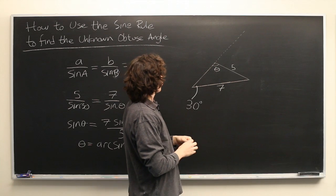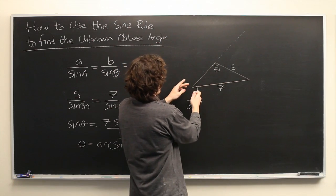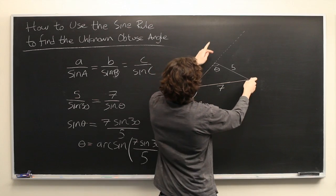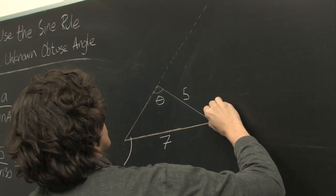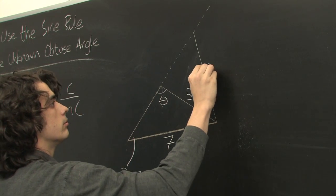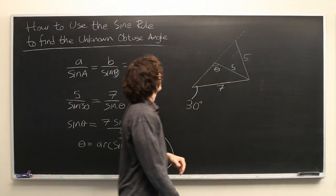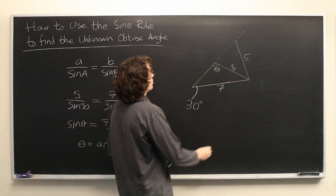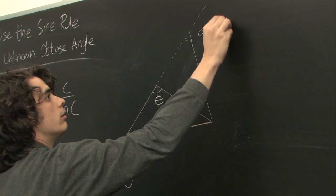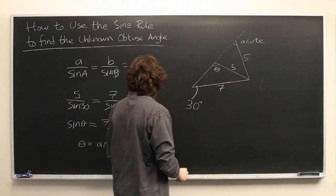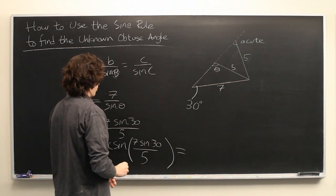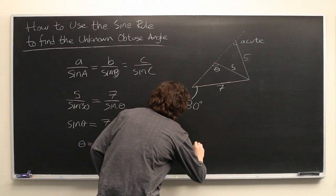There are actually two triangles that will make this configuration happen, with a 30-degree angle, a side of length 7, and a side of length 5, and the other one will look something like this. So one of these triangles will have an acute angle here, and this will give us that angle, which is approximately 44 degrees.